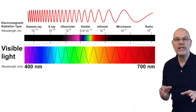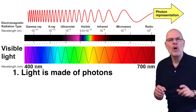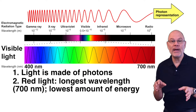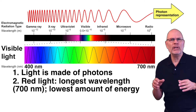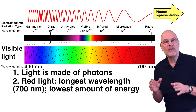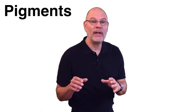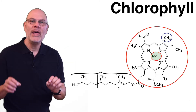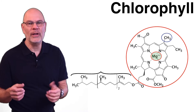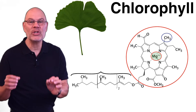Visible light is made of massless particles called photons that vary by wavelength and energy. Red light has the longest wavelength and the lowest energy of any visible light. The wavelength of red light is 700 nanometers. Blue light has a shorter wavelength and higher energy. Pigments are substances that absorb certain wavelengths and reflect others. The main pigment in photosynthesis is chlorophyll. There are two forms and they absorb red and blue light and reflect green light. That's why chlorophyll is green and why leaves are usually green.